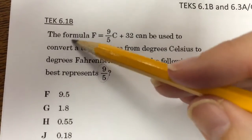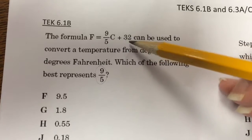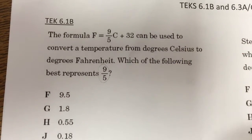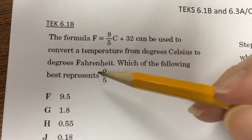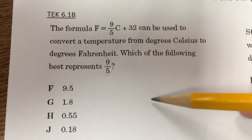Here's our next question. The formula F equals 9 fifths times C plus 32 can be used to convert a temperature from Celsius to Fahrenheit. Which of the following best represents 9 fifths?